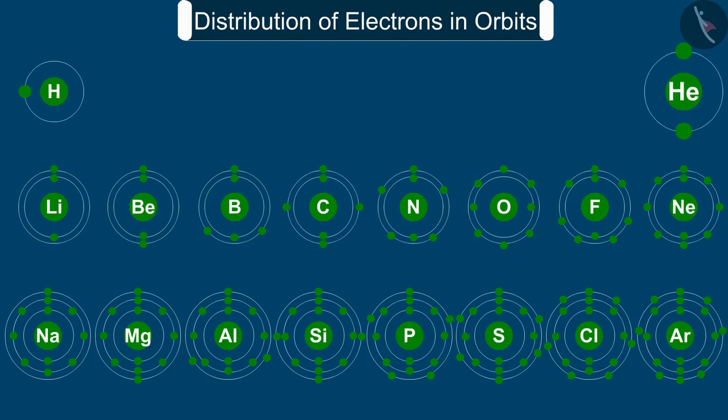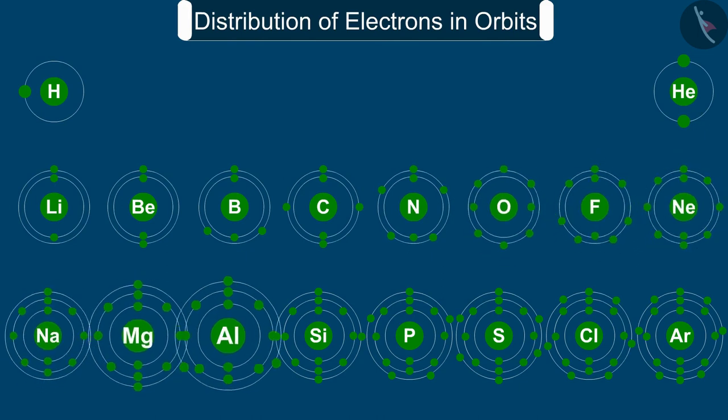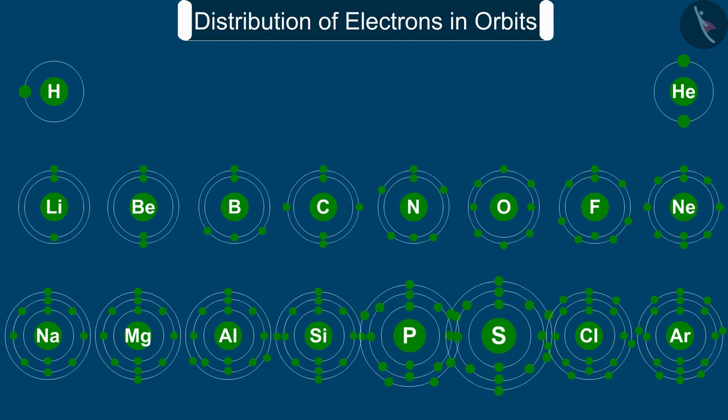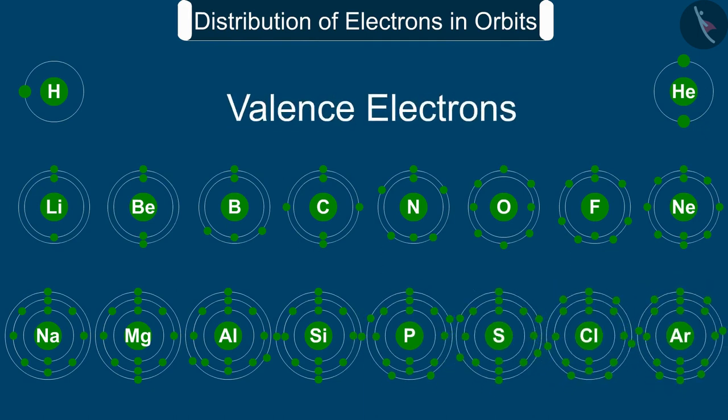We have learned how the electrons in an atom are arranged in different shells or orbits. The electrons present in the outermost shell of an atom are known as the valence electrons.